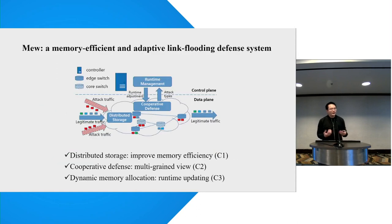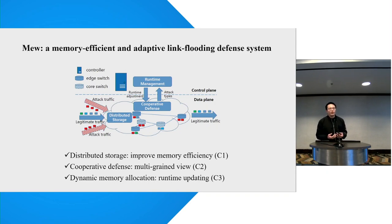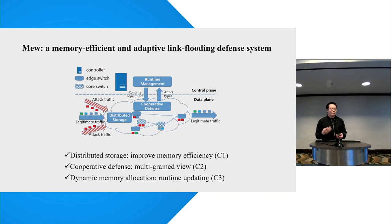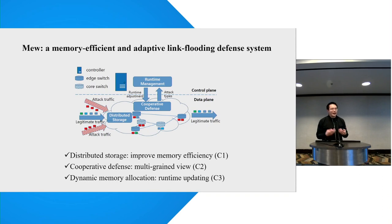In this paper, we propose MEW, a memory-efficient and adaptive link flooding defense system. To improve memory efficiency, we design a distributed storage mechanism. To broaden the network view of each switch, we design a series of cooperative defense APIs. Finally, we propose dynamic memory allocation to support runtime updating on P4 switches.